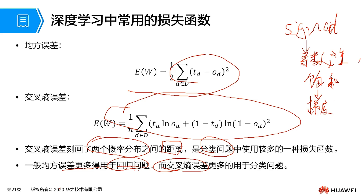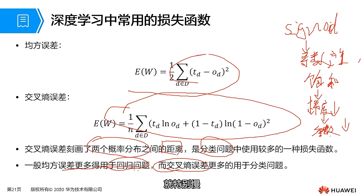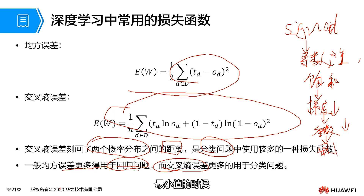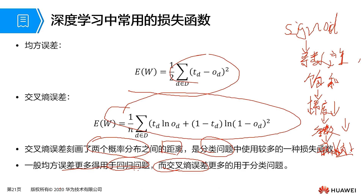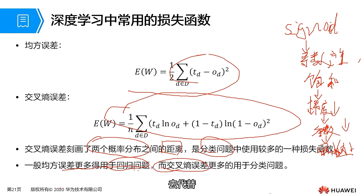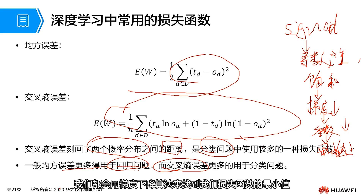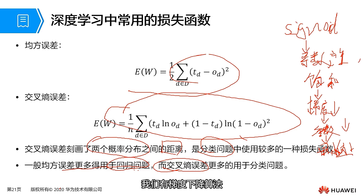When parameter updates are too slow, finding the minimum value of our loss function becomes very difficult. We therefore use the cross entropy error function to replace mean square error. Regardless of which loss function is used, we apply the gradient descent algorithm to find the minimum. In gradient descent, we have several types: the global gradient descent algorithm, the stochastic gradient descent algorithm, and the mini-batch gradient descent algorithm.